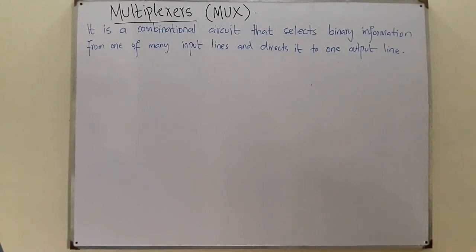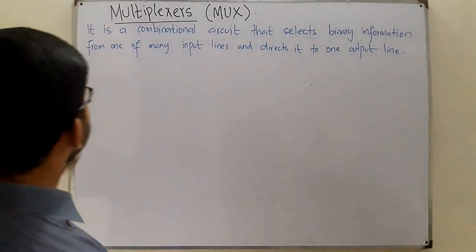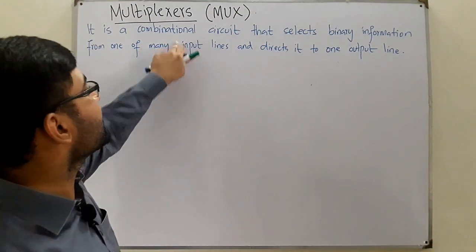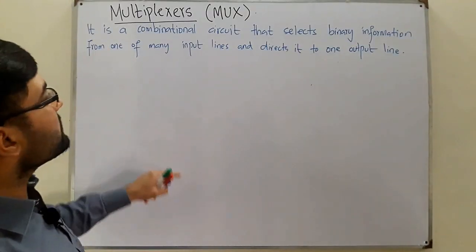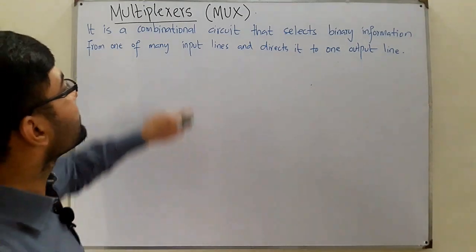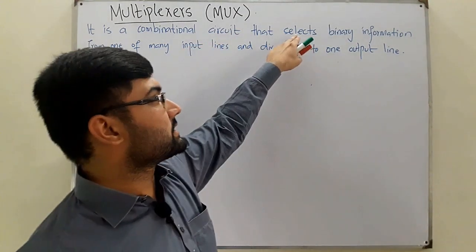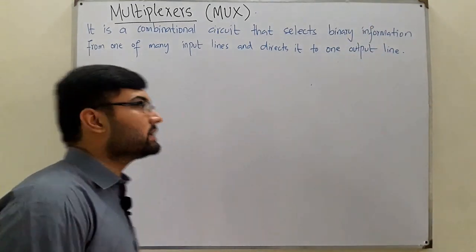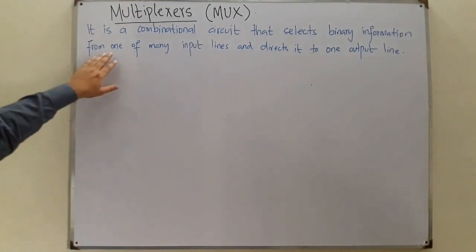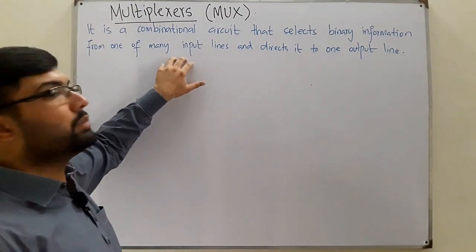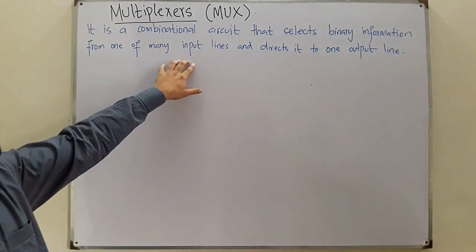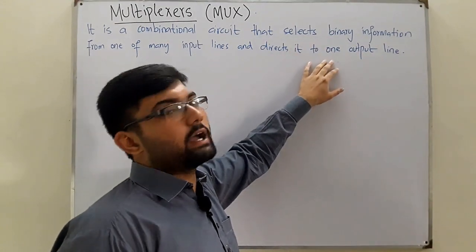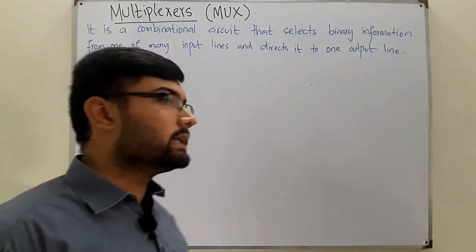Looking at the definition: a multiplexer is a combinational circuit — meaning it has nothing to do with the previous output, it only works on the present inputs. It selects binary information from one of many input lines.